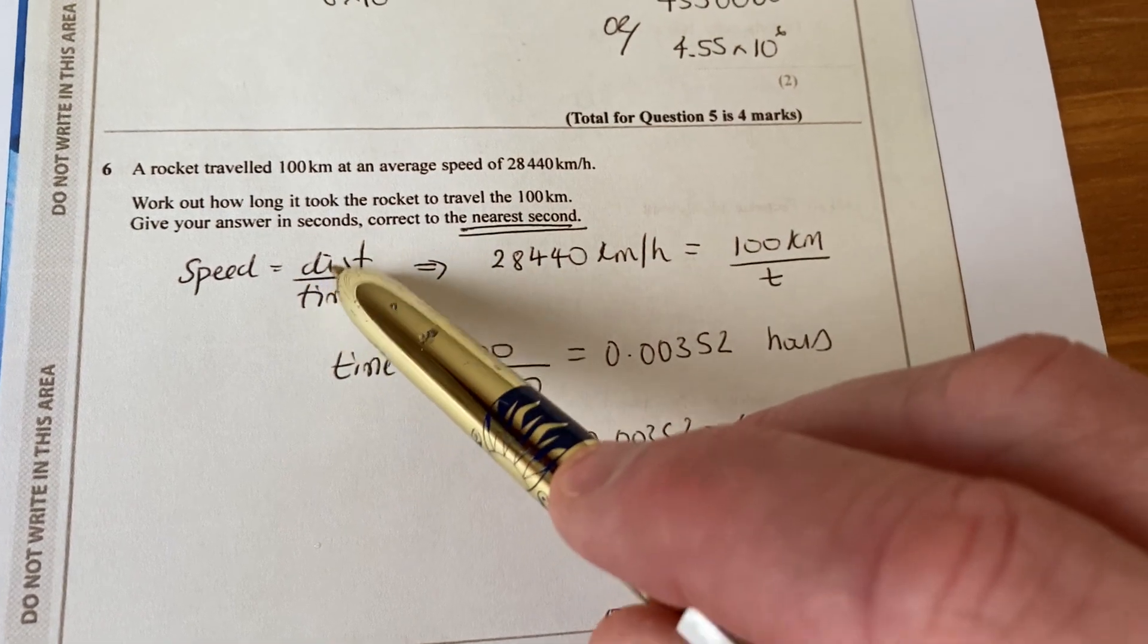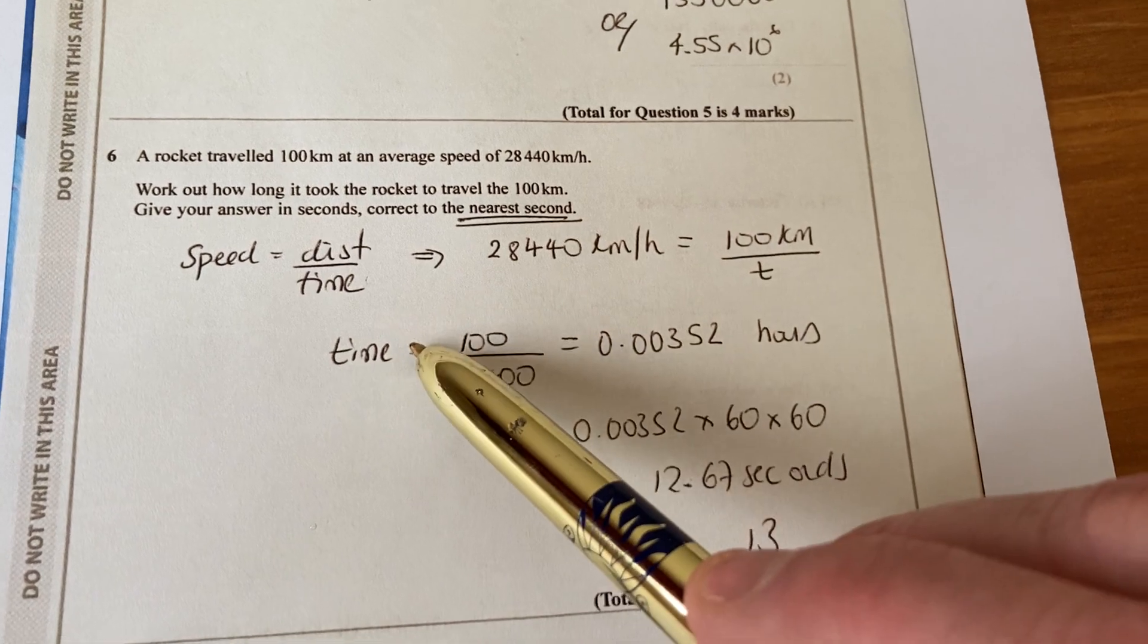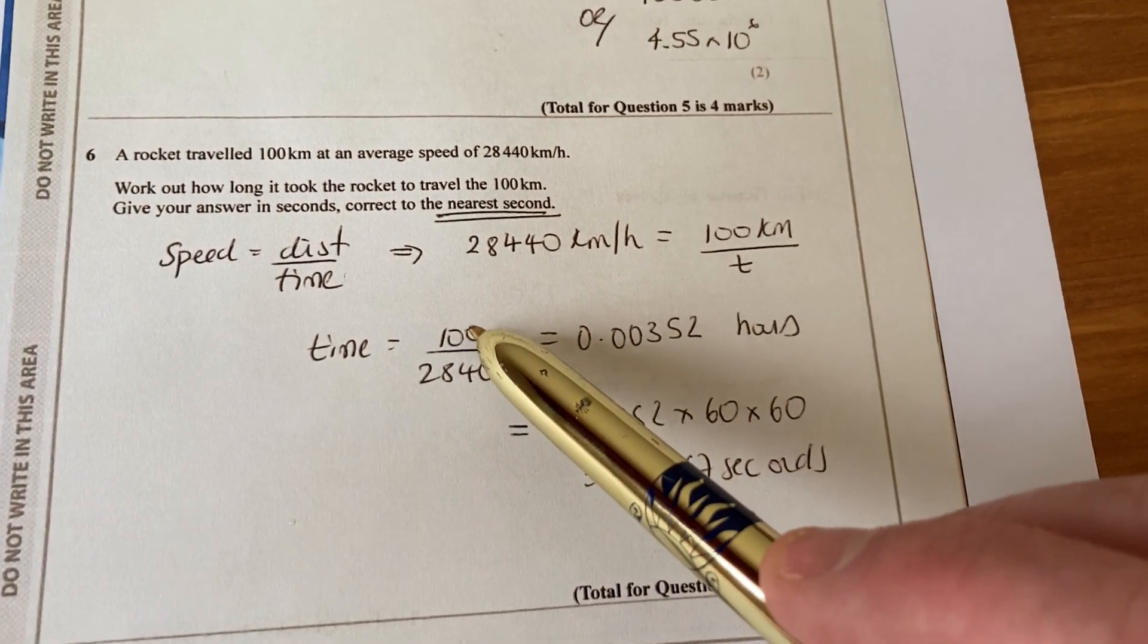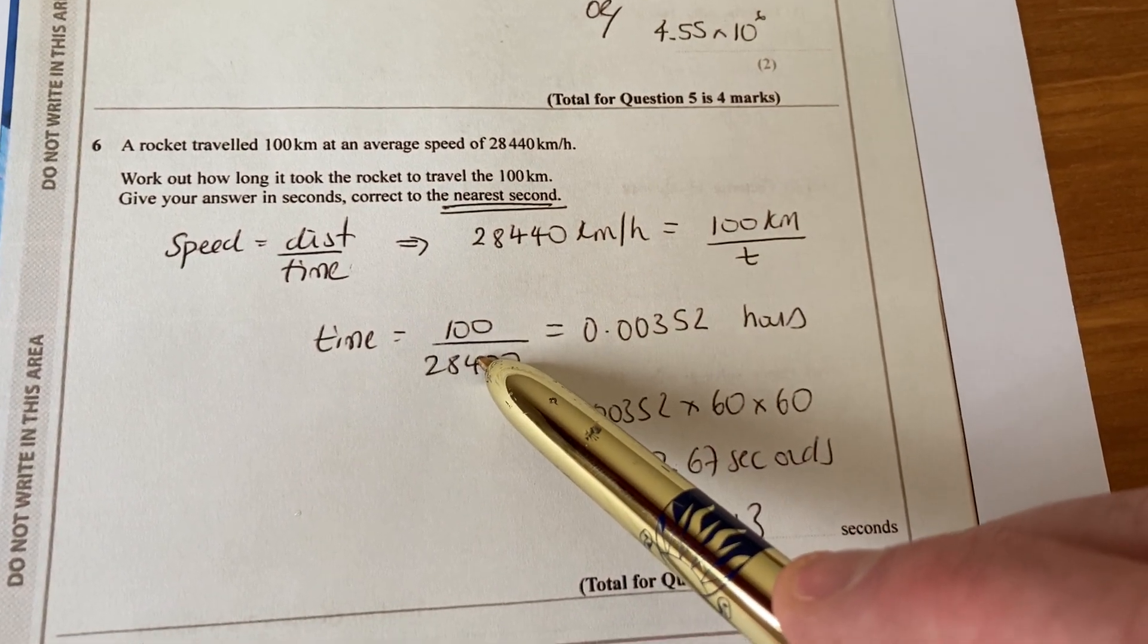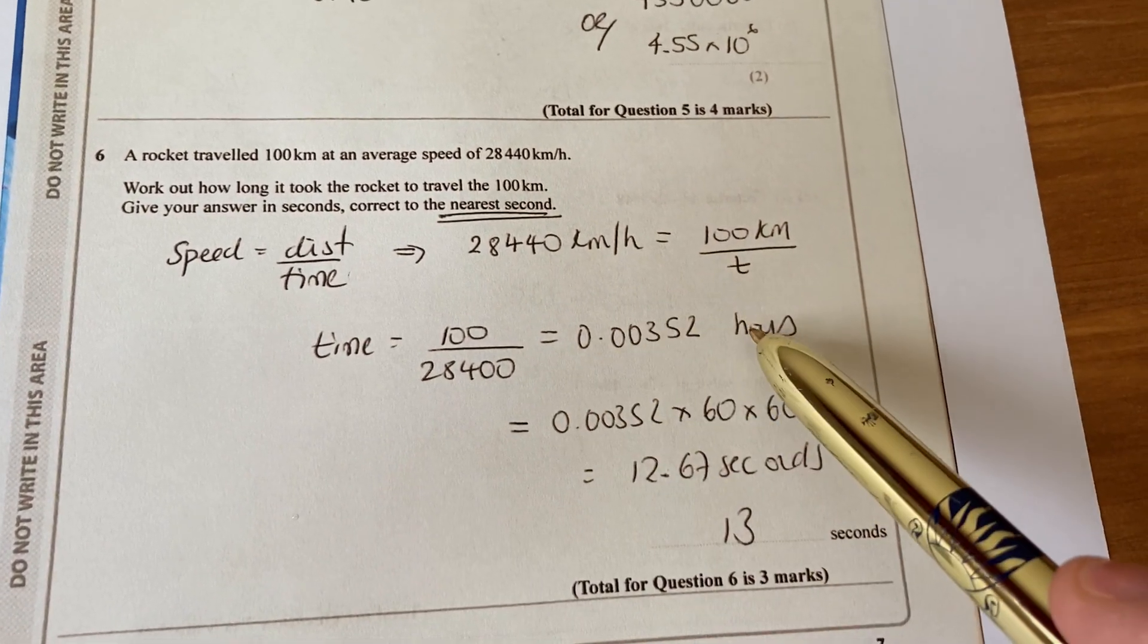If I rearrange that, either using algebra or the science triangles, you will find that time equals distance over speed. Subbing in the numbers, 100 over 28,440, you get your answer in hours.